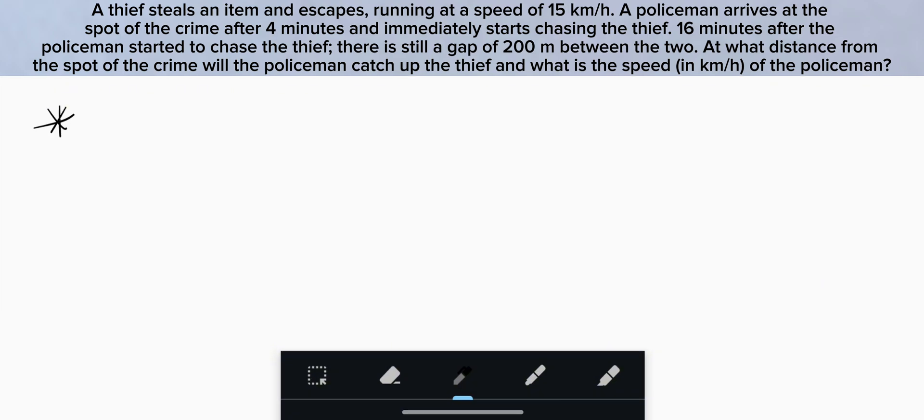Let's say this is the starting point. Thief traveled 4 minutes before police arrived. So distance traveled by thief in 4 minutes is distance equal to speed times time. So speed is 15 kmph and time is 4 minutes in hours, 4 by 60. That's 1 km. So in 4 minutes, he traveled 1 kilometer.